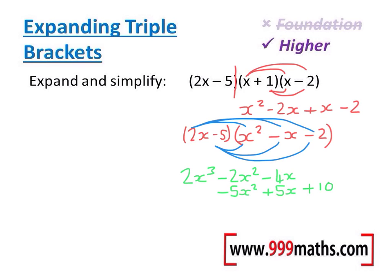So all I need to do now is simplify these answers. I can see I've got 2 lots of x squared terms and 2 lots of x terms, so they need simplifying. My final answer will be 2x cubed minus 7x squared minus 4x add 5x will be add 1x and then add 10.